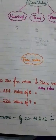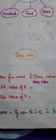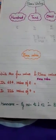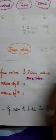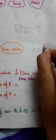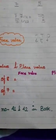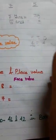Now here is face value. Face value is the value of the digit itself. For example, in four hundred fifty-four — here we have hundreds, tens, and ones. If I ask you the face value of digit four, it means the digit itself. So the face value of digit four is four.